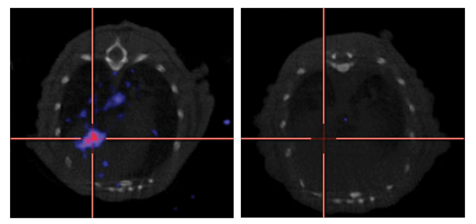SenecaVirus, also known as Seneca Valley Virus, is a naturally occurring wild-type oncolytic picornavirus discovered in 2001 as a tissue culture contaminant at Genetic Therapy, Inc. The initial isolate, SVV001, is being developed as an anti-cancer therapeutic by Neotropics, Inc. under the name NTX010 for cancers with neuroendocrine features including small cell lung cancer and a variety of pediatric solid tumors.